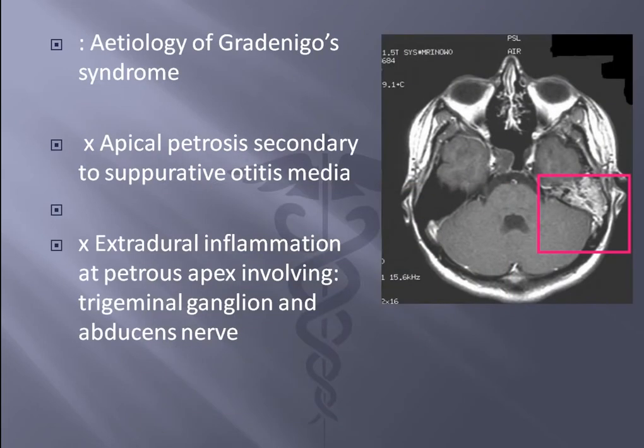The etiology of Gradinego syndrome involves apical petrositis — petrositis secondary to suppurative otitis media. There is extra-dural inflammation of the petrous apex involving the trigeminal ganglion and the abducent nerve.